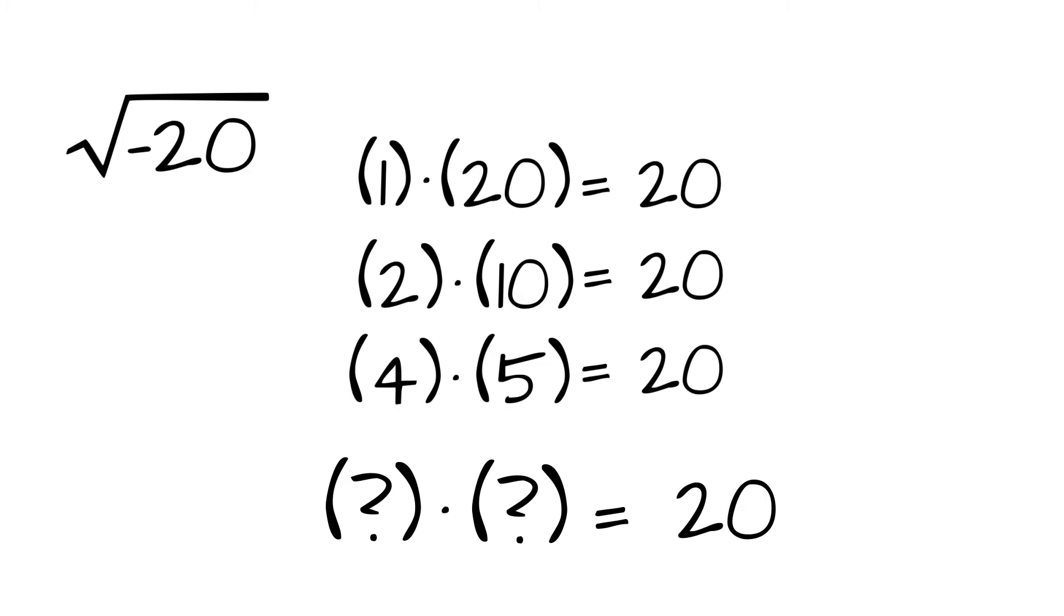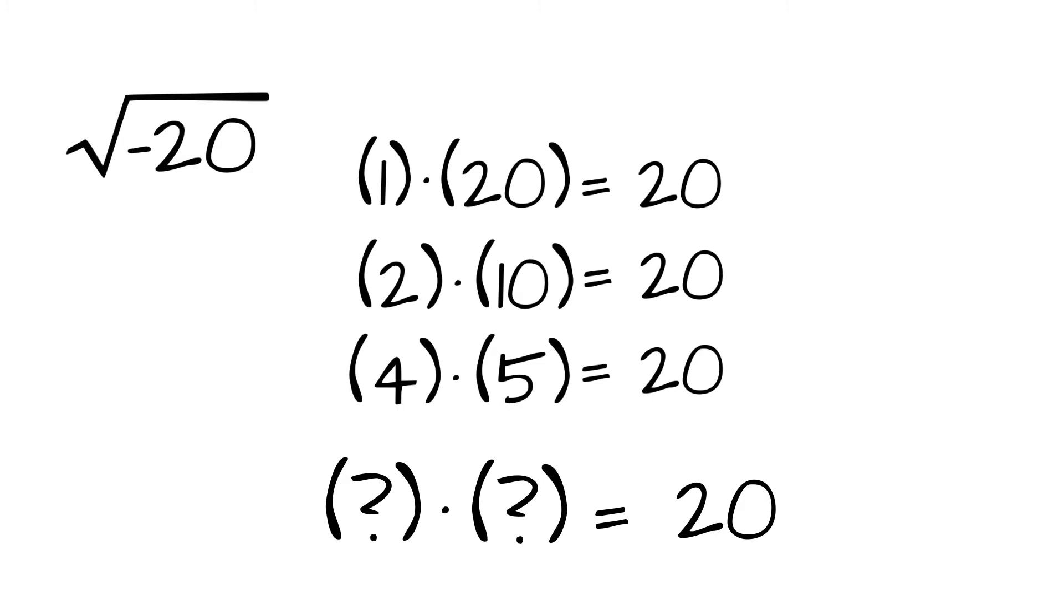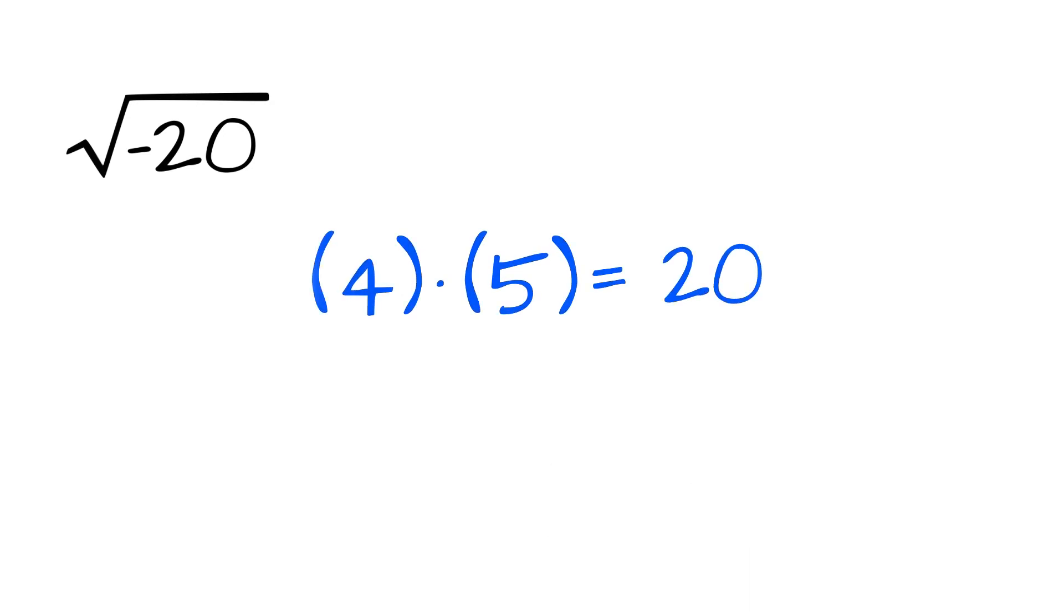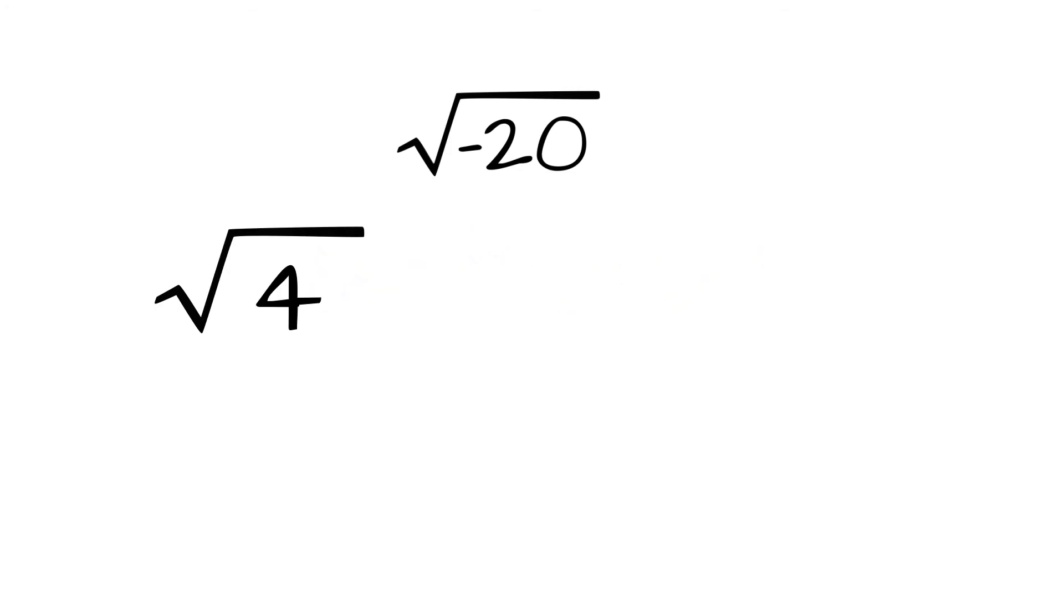We're going to use 4 times 5, since 4 is a perfect square. Now we can rewrite the square root of negative 20 as the square root of 4 times the square root of 5 times the square root of negative 1. Since 4 times 5 times negative 1 is negative 20, the square root of 4 is 2.